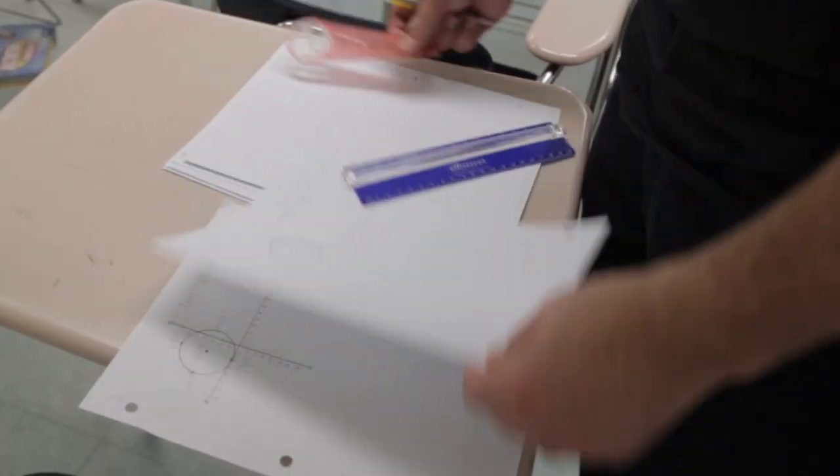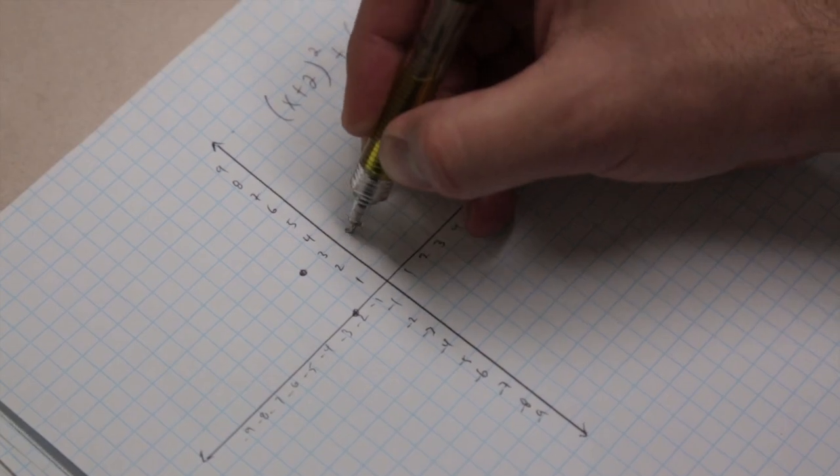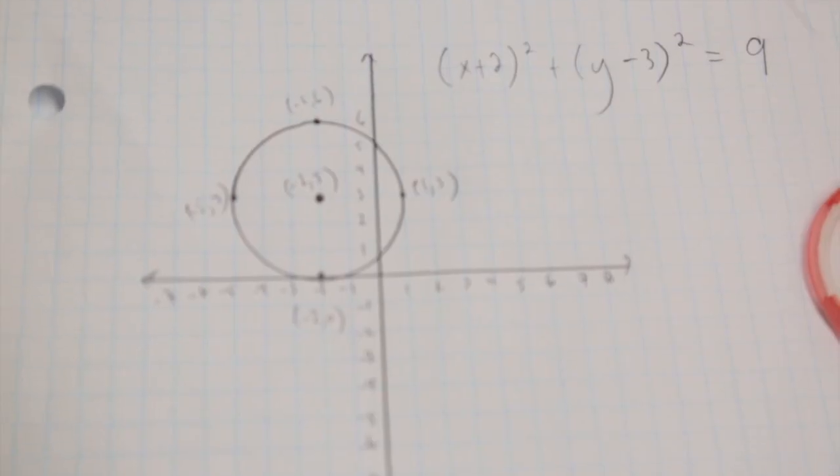Crept down the hall, made a right. Turned on my lights, grabbed paper on sight. First I plot the center then I plot the radius. I always use a compass so my circles look real fly.